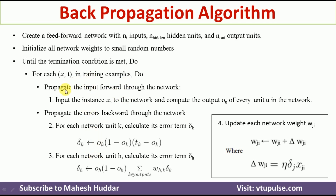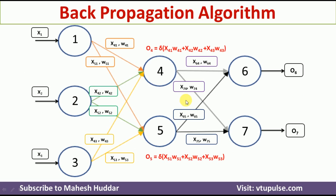For each training example we perform the following steps. Step one: propagate the input forward through the network — that is, input the instance x to the network and compute the output Ou for every unit u in the network. You need to give each instance to the network and calculate the output of every unit. First we have these input and weight vectors — the input is directly given from the instances and the weights are assigned randomly. We need to calculate the output of the fourth and fifth units — the first and second units of the hidden layer.